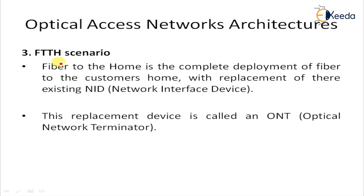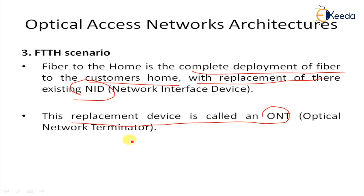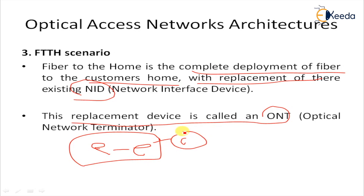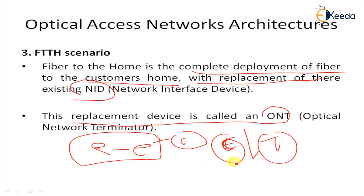Next is the FTTH scenario. Fiber to the Home is a complete deployment of fiber to the customer's home, replacing existing network interface devices and any DSL or PSTN equipment. This replacement device is called an ONT — Optical Network Terminal. In this case, the network provides end-to-end fiber optic connections with no copper leg required, delivering faster speeds than the previous FTTC scenario.